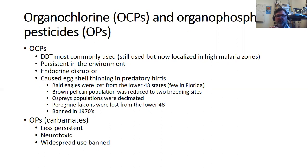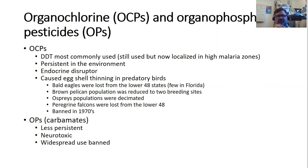Osprey populations plummeted, as did bald eagles, brown pelicans, and peregrine falcons — birds eating high up on the food chain. Peregrine falcons eat the birds that eat the fish in those food chains. Bald eagles and peregrines were lost from the lower 48 states, with only remnant populations in Canada, Alaska, and possibly a few bald eagles in Florida. At one time, you would not find bald eagles or peregrine falcons in Pennsylvania. Now that DDT is banned, their populations are booming — the peregrine falcon was just removed from the threatened list.